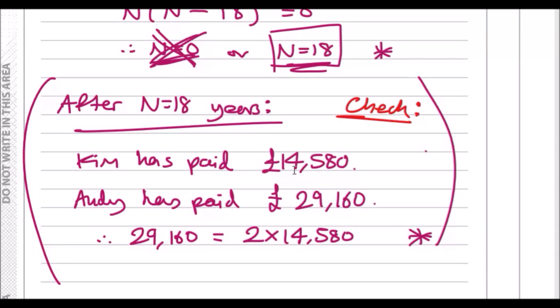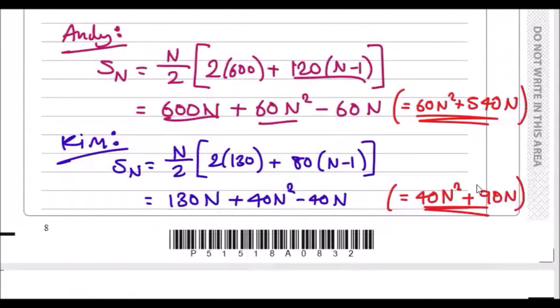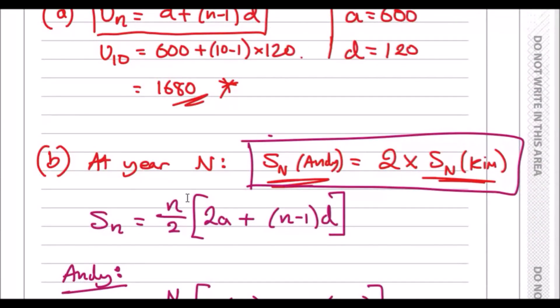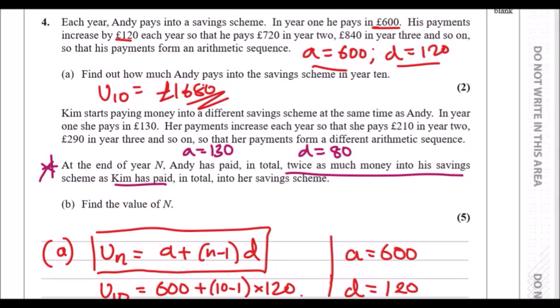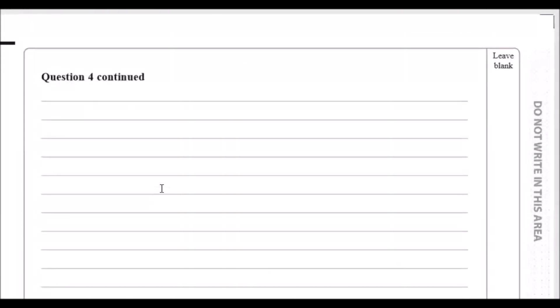turns out Kim actually paid 14,580 pounds, while Andy paid practically double, 29,160. And to check this is exactly double, you can see that two times 14,580 is the same amount Andy paid. And voila, that's it. You don't have to do this bit. This is just a verification check for ourselves, just so we can see the figures ahead of us. But as long as you guys got this first statement done, then you did well. Anyway guys, thanks for watching so far. And I'm gonna move on to question five now.